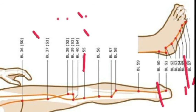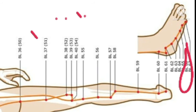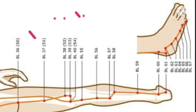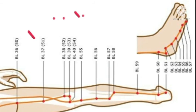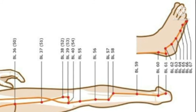BL66 is the own point of the UB meridian. BL66 means what? Water point of the UB meridian. In this way, BL starts from the corner of the eye and ends at the tip of the last toe.